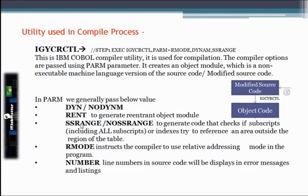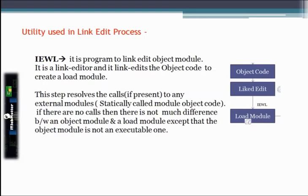For example, if you have a table with 10 elements and try to read the 11th element, with SSRANGE an error will come. With NOSSRANGE it will allow reading the 11th element but may return a garbage value. Then we use RMODE, which instructs the compiler to use relative addressing mode. We also use NUMBER — the line number in the source code will be displayed in any error messages, showing at which line number the error occurred during compilation.